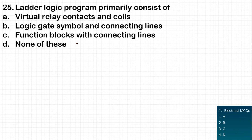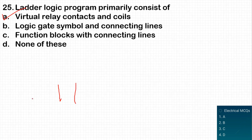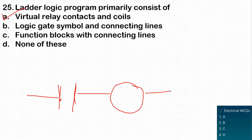The next question: a ladder logic program primarily consists of what? Ladder logic is part of a PLC (Programmable Logic Controller). The answer is virtual relay contacts and coils. As shown here, this kind of arrangement includes normally open and normally closed contacts. You must remember that virtual relay contacts and coils are the primary components of a ladder logic program.